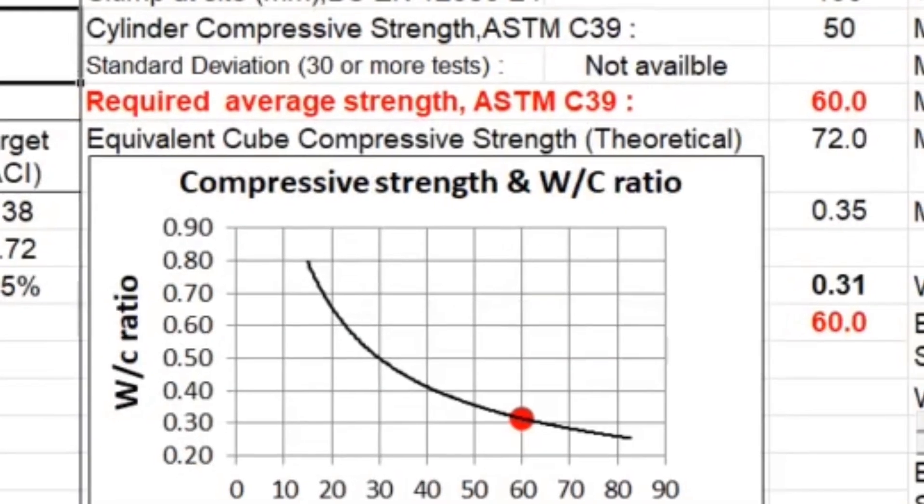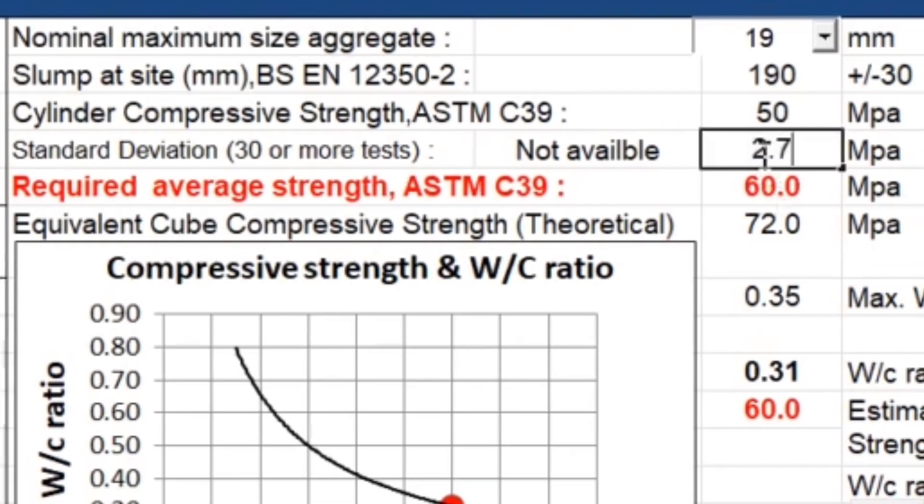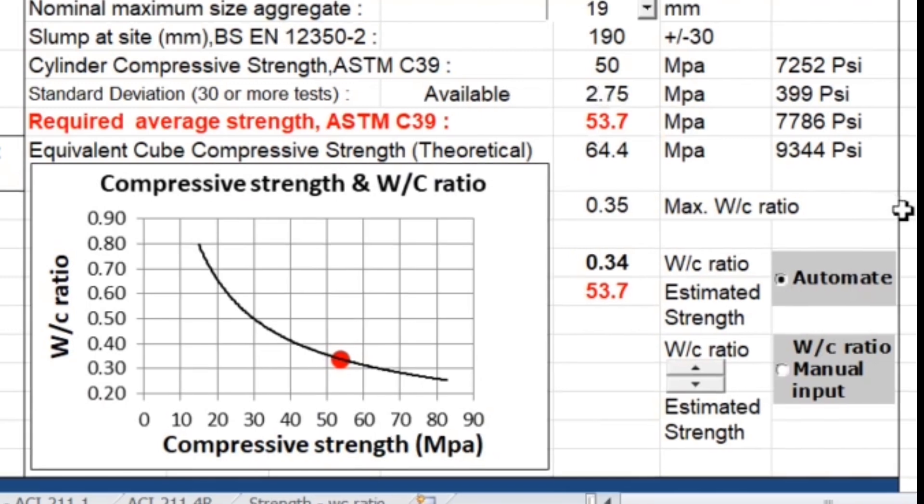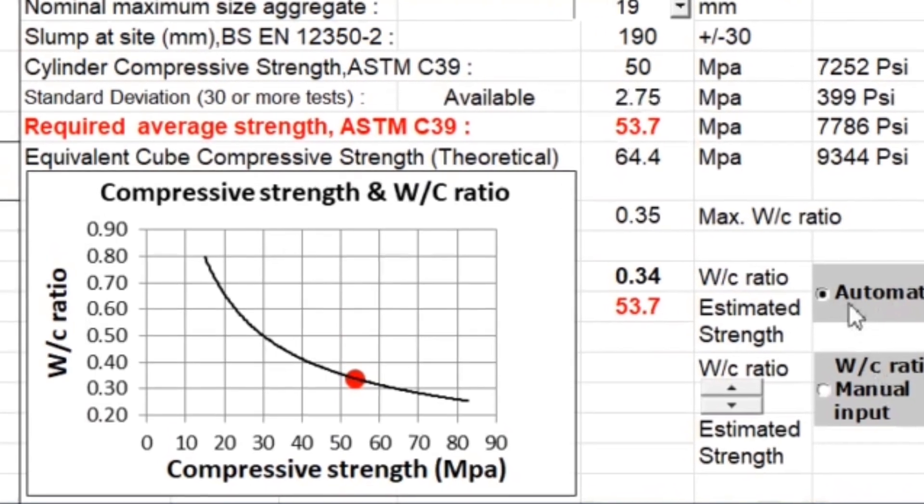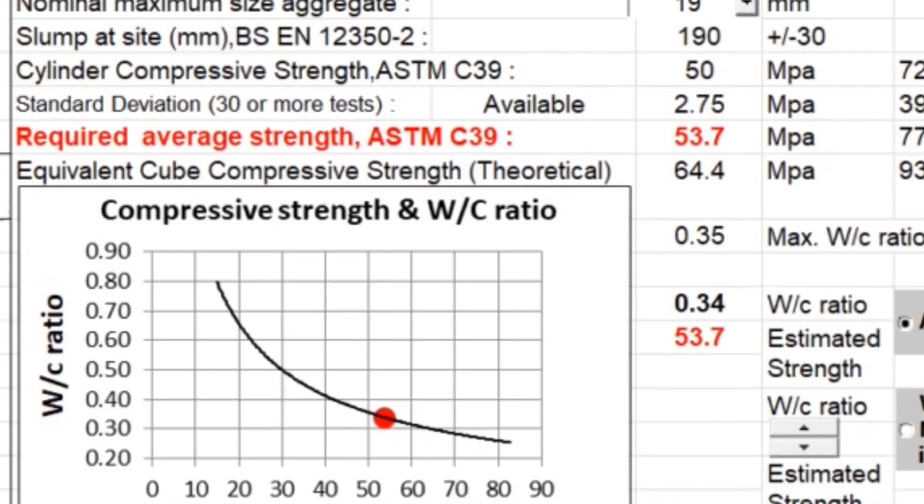Now, using this 2.75, let's go back to our optimizer and apply this 2.75 standard deviation. So now, I just have to use higher water cement ratio of 0.34 to achieve the new lower target strength of 53.7 MPa.